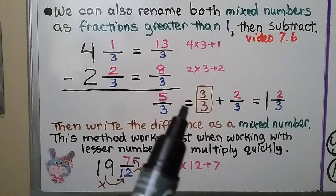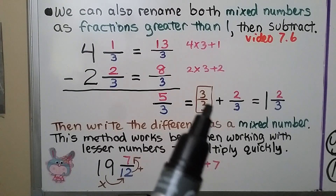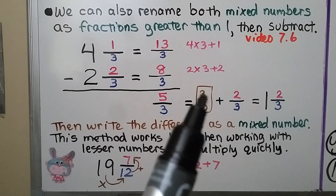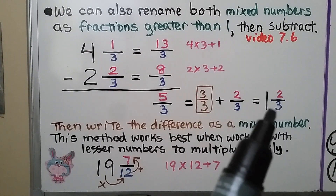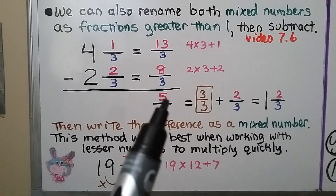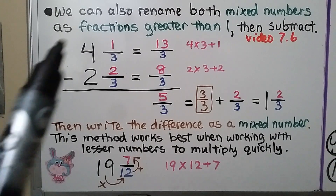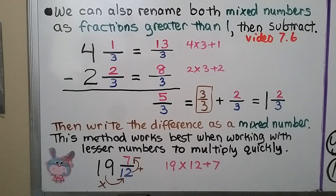And 5 thirds is equal to 3 thirds plus 2 thirds, which means it's equal to 1 and 2 thirds. We write the difference as a mixed number — we don't leave it as an improper fraction. This method works best when working with lesser numbers like these.